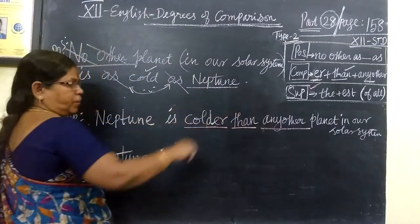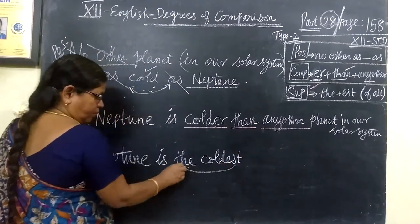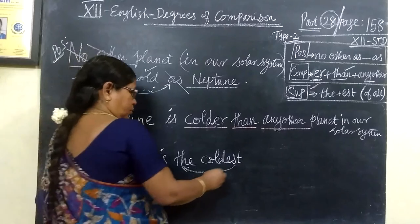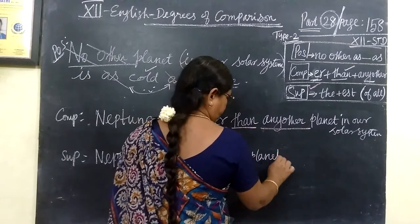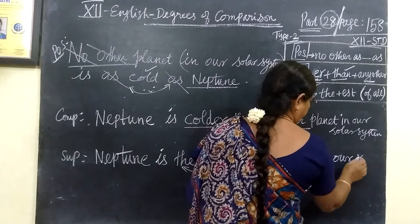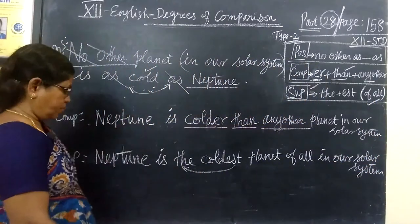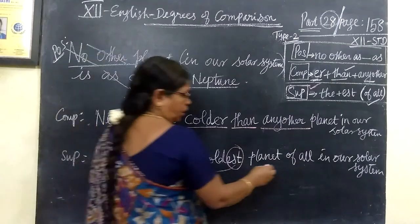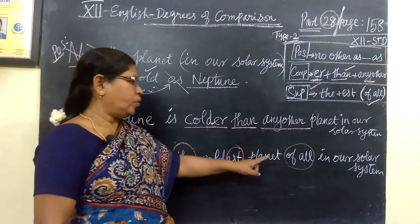The coldest. So, 'the coldest.' Neptune is the coldest planet of all in our solar system. Thank you.